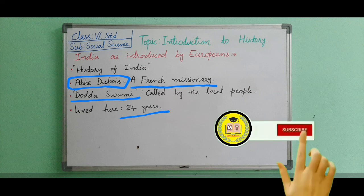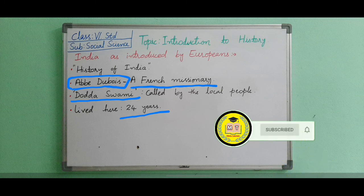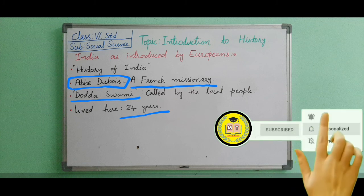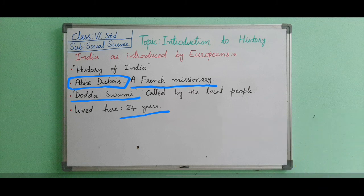With this we have completed our first chapter on introduction to history. Foreign scholars like William Jones, Max Muller, Abbé Dubois, and others have been discussed. If you have any doubts, you can ask in the comment section. Thank you.